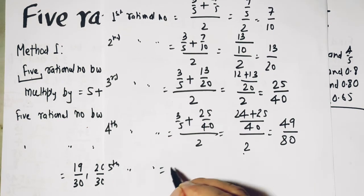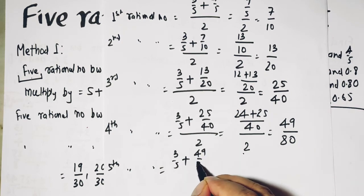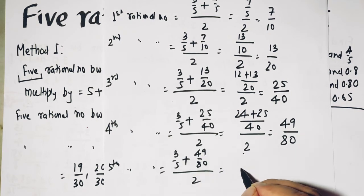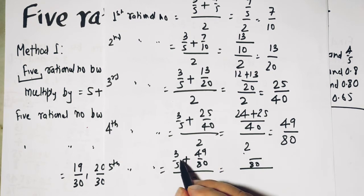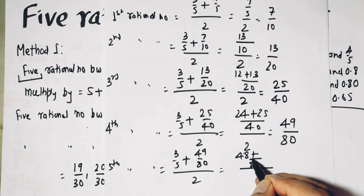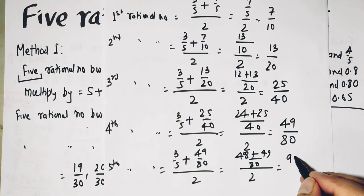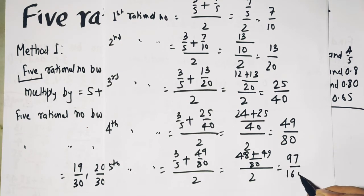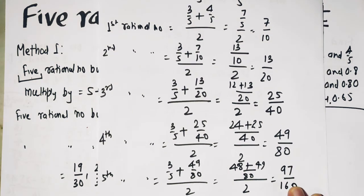And finally we have the fifth number. Again take this 3 upon 5, but now this 49 upon 80 divided by 2. If you take LCM you get 80. 16 times 3 is 48 plus 49 upon 2. 48 plus 49 is 97 upon 160. So these are our rational numbers: 7 upon 10, and the others.